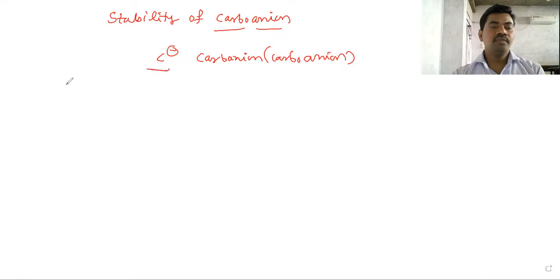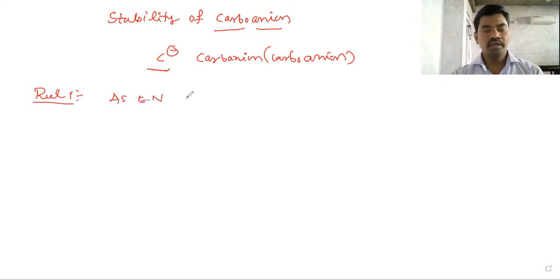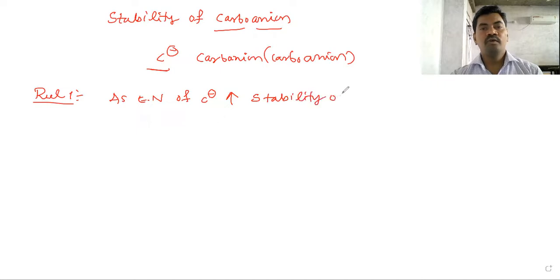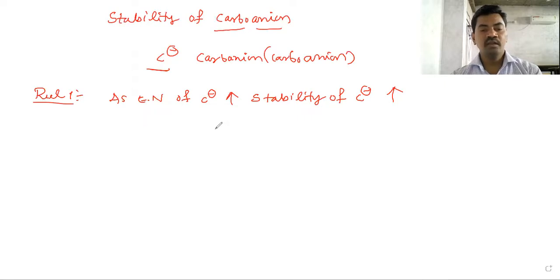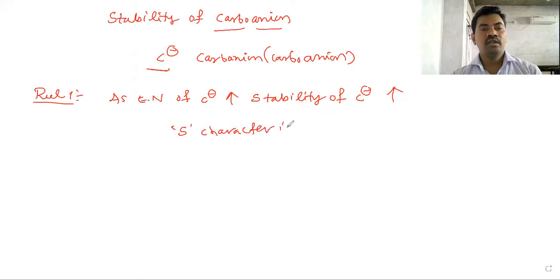So regarding the stability of carboanions: as the electronegativity of the carboanion increases, the stability of the carboanion also increases. If the s-character is less, then stability is more. If s-character is more, then stability is less.